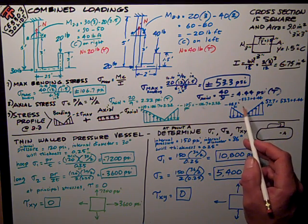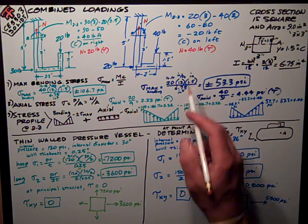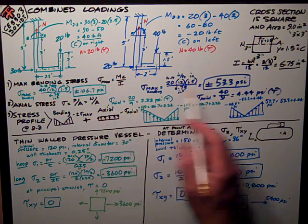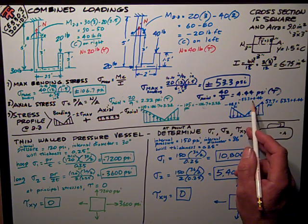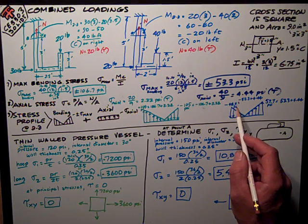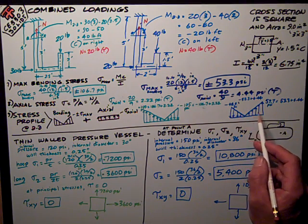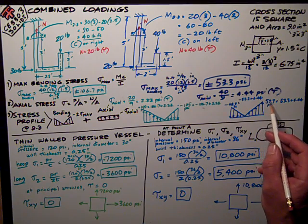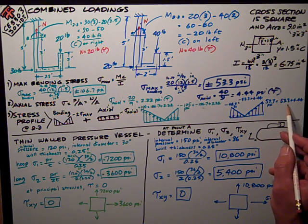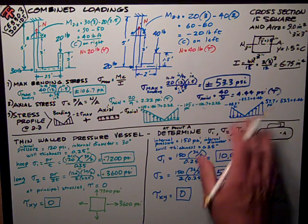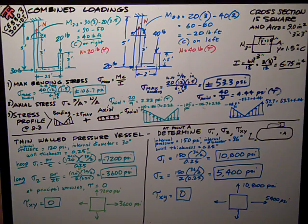On the blue test, I had compression on the left, so I have negative 53.3 from bending plus the axial stress, giving negative 48.9 PSI on the left. On the right, I have tension from bending plus tension from axial: 53.3 plus 4.44 gives 57.7 PSI. Your drawing should look like that.